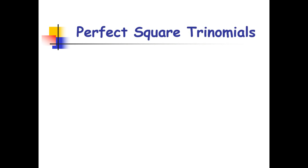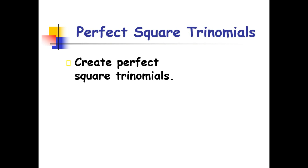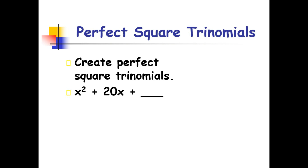Now how about these examples? Let's create perfect square trinomials. We have x squared plus 20x plus blank. Half of 20 is 10, and 10 squared is 100. Another example: x squared minus 4x plus blank. Half of 4 is 2, and 2 squared is also 4. So therefore the answer is 4.